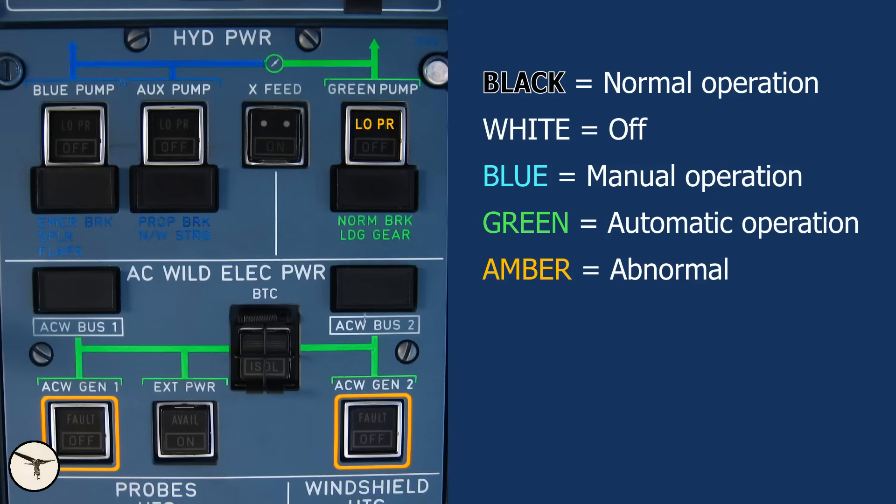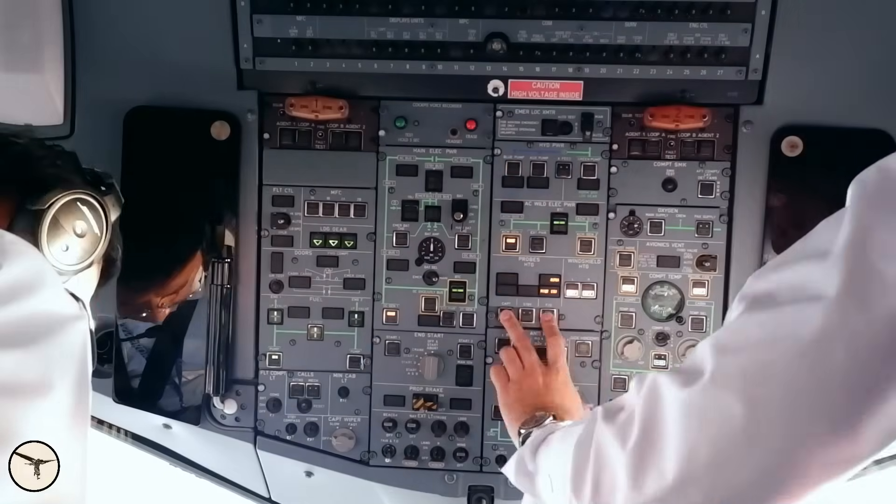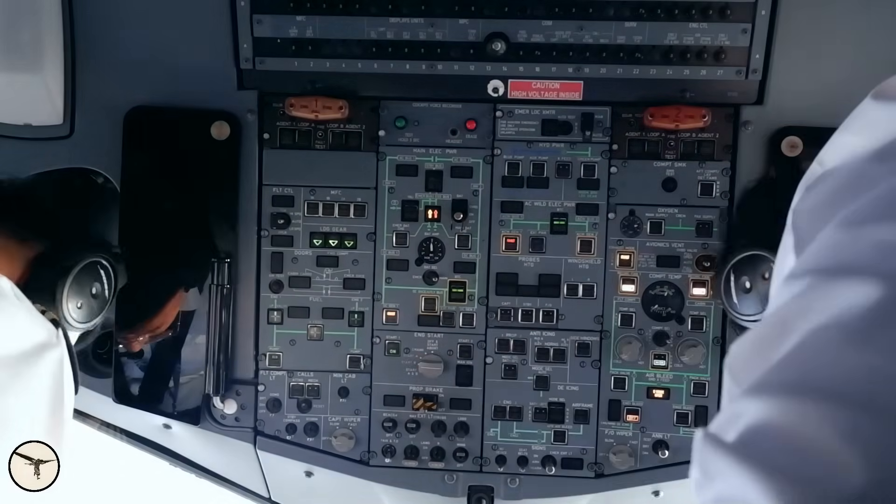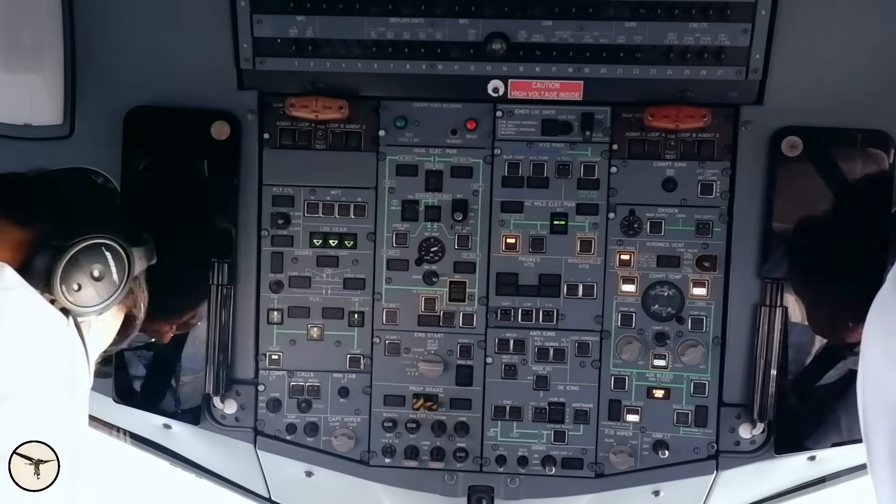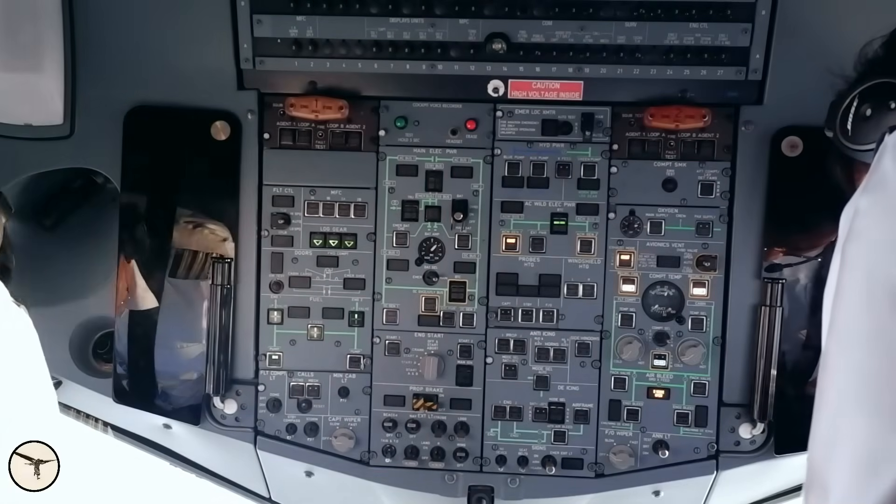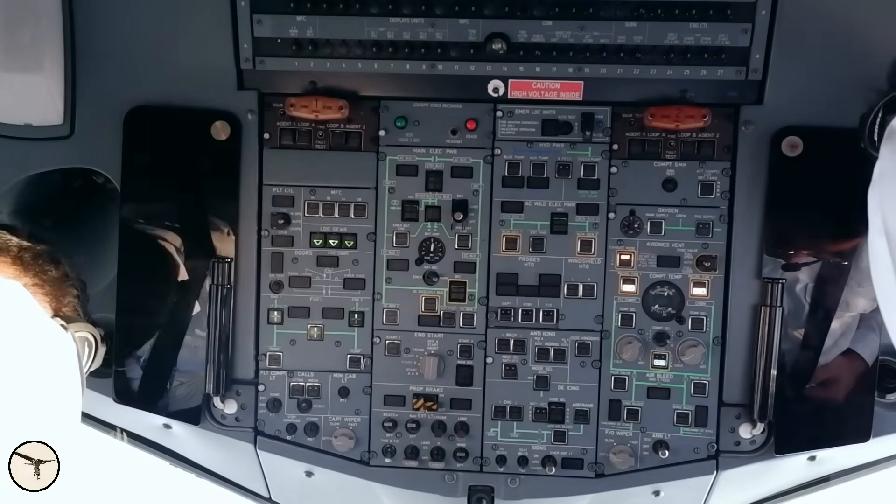Amber, the system is selected on, but is not operative. We often see amber lights before the engines are started, such as those for the generators and their associated systems. As we start the engines, the amber lights gradually disappear, one by one, until they are all gone.